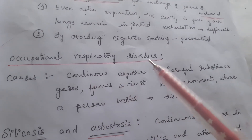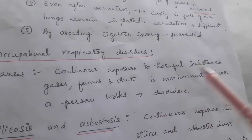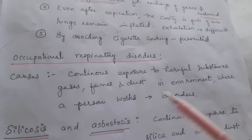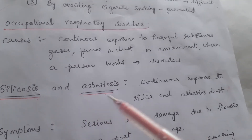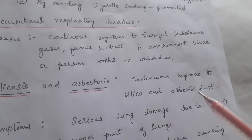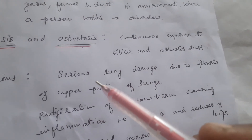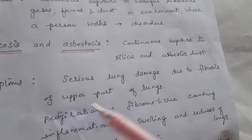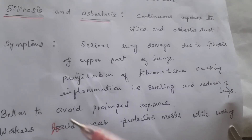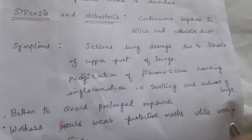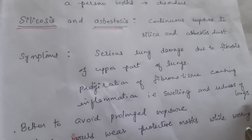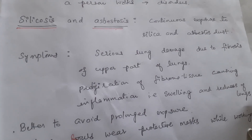Occupational respiratory disorders arise from continuous exposure to harmful substances — gases, fumes, and dust — in the workplace. Disorders include silicosis, caused by continuous exposure to silica dust, and asbestosis, caused by continuous exposure to asbestos dust. Symptoms involve serious damage to lungs due to fibrosis of the upper part of the lungs and proliferation of fibrous tissue causing inflammation. It is better to avoid prolonged exposure to such pollutants, and workers should wear protective masks while working in industries. This completes the respiratory system of the human being.